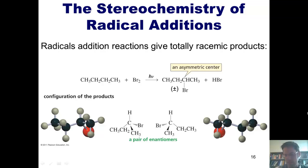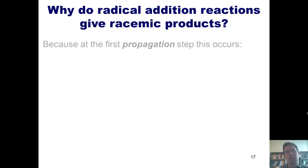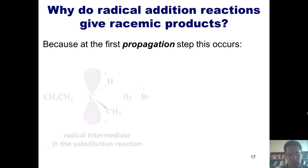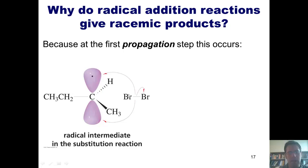Why does that occur? The reason is because at the first propagation step, the one in which a bromine forms a bond with our carbon radical, the bromine can just as easily form a bond on the top side of this carbon as it can with the bottom side of this carbon. In fact, it will do both with just as much ease and prevalence.